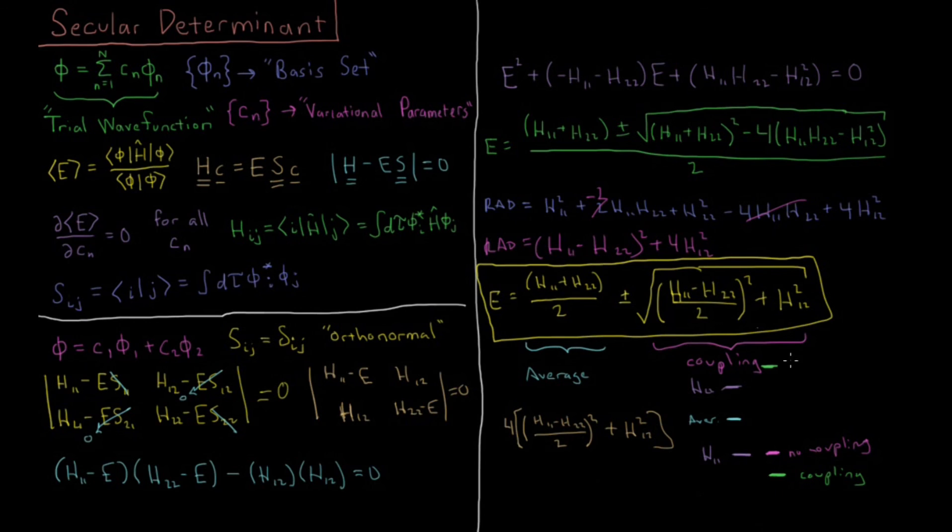So this has all been pretty abstract thus far, even deriving the specific case for a 2x2 orthonormal system, but in the next video we'll look at a specific example of this and see what this means in practice for the energy of a quantum mechanical system.